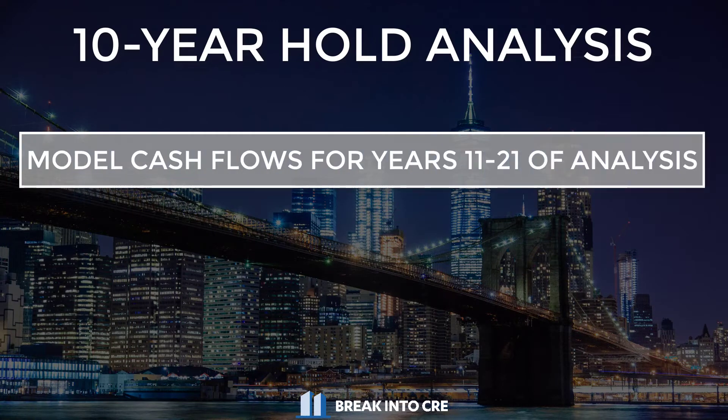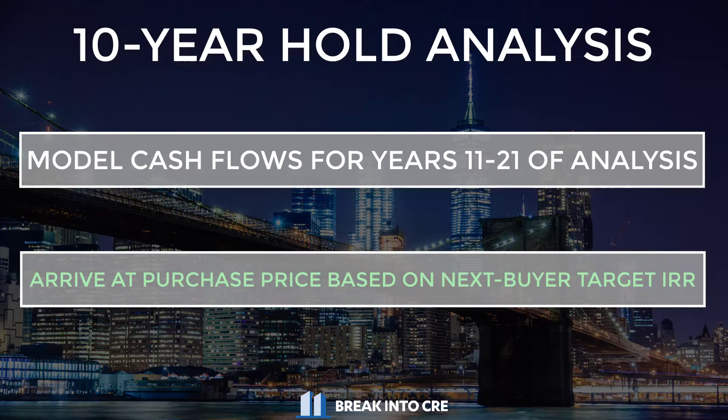So if we use a 10-year hold period example, what you're going to do to run a next buyer analysis is you're going to actually model out the cash flows for years 11 through 21 of your analysis to figure out what those cash flows are likely to be for that next buyer, to arrive at a purchase price that's going to make sense based on their required internal rate of return. The analysis gets pretty detailed here and involves not only setting an exit cap rate for your sale, but also an exit cap rate for the next buyer's sale as well, and also incorporating a targeted internal rate of return for that next buyer.